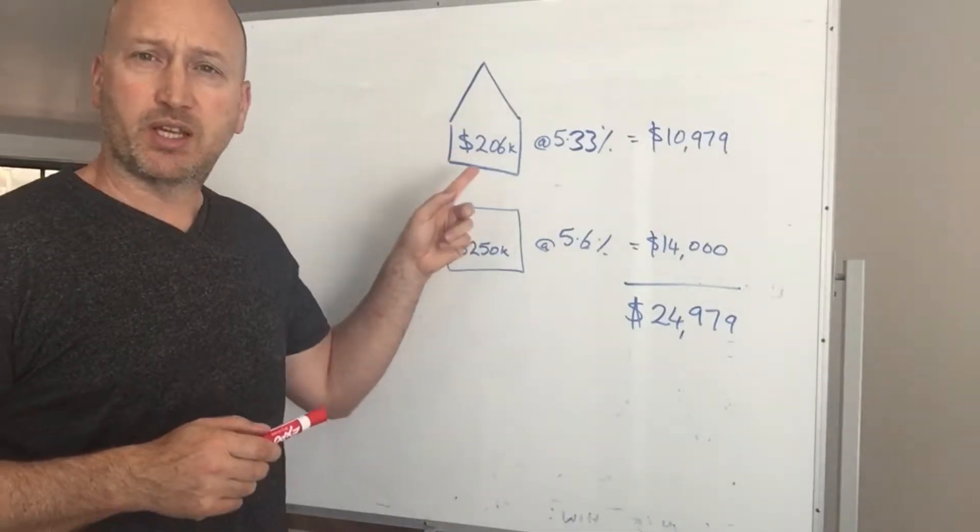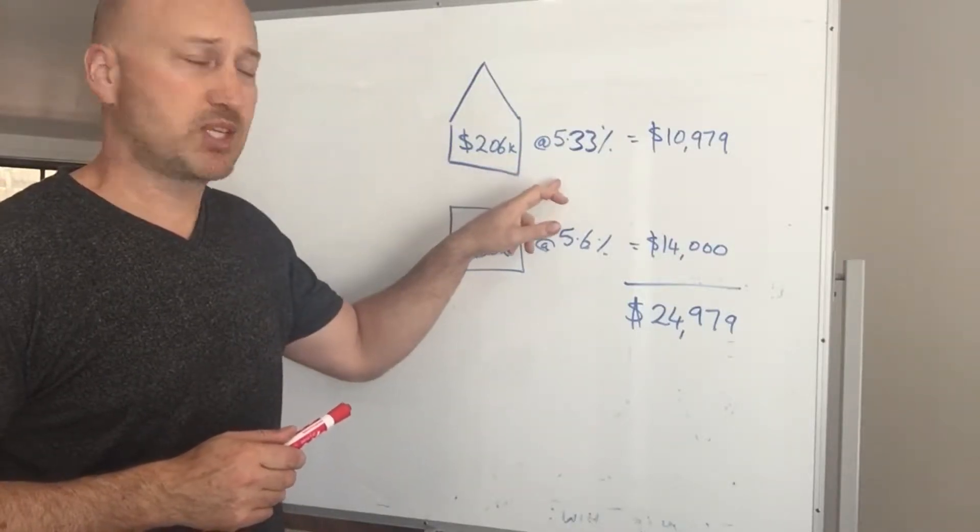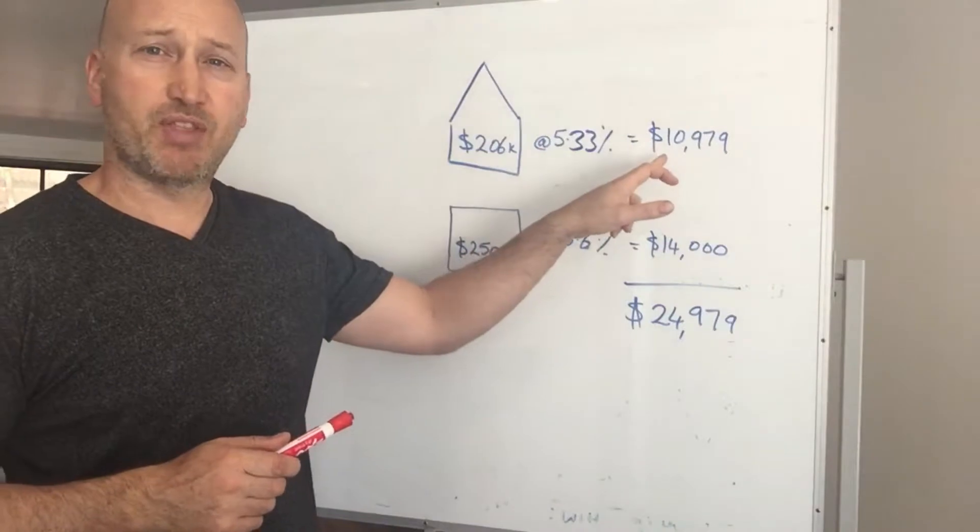They had a home loan of $206,000 and they were paying 5.33%, which is about almost $11,000 in interest.